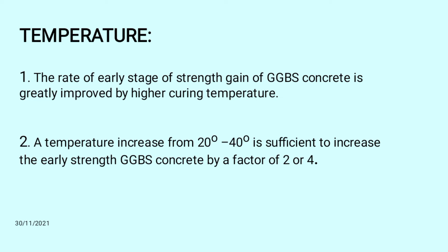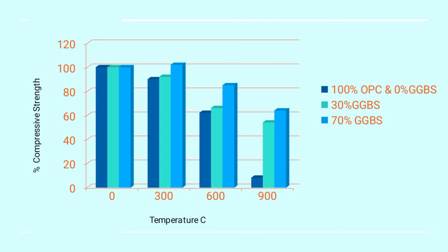Temperature: First, the rate of early stage strength gain of GGBS concrete is greatly improved by higher curing temperature. As the temperature increases from 20°C to 40°C, it is sufficient to increase the early strength of GGBS concrete by a factor of 2 or 4. Here the temperature variation is shown in comparison with compressive strength of GGBS.